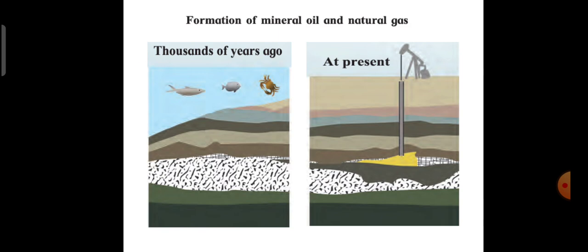As you can see here, at present the condition is that there are no aquatic plants and animals over there in the water body, but there is only a machine which is just removing the mineral oil.